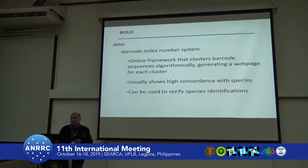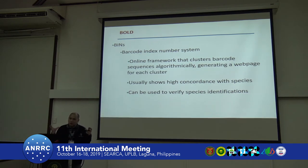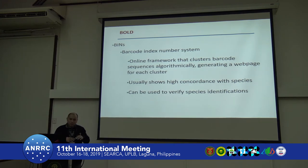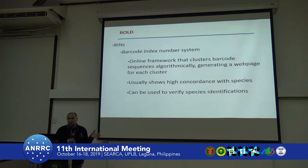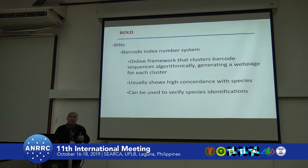BOLD came up with an alternative called BINs — the Barcode Index Number system. It's an online framework that clusters barcode sequences algorithmically. They use a clustering algorithm that groups all barcodes into the most similar types depending on the threshold value, and then generate a webpage for each barcode number. Each BIN includes as many specimens as possible that are very similar to one another, and in most cases shows high concordance with species identification and can be used to verify species identification.